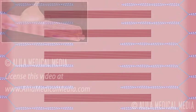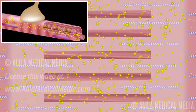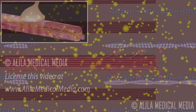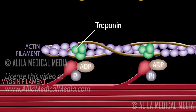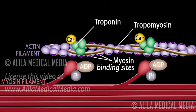Cross-bridge cycling forms the molecular basis for this sliding movement. Muscle contraction is initiated when muscle fibers are stimulated by a nerve impulse and calcium ions are released. The troponin units on the actin myofilaments are bound by calcium ions. The binding displaces tropomyosin along the myofilaments, which in turn exposes the myosin binding sites.